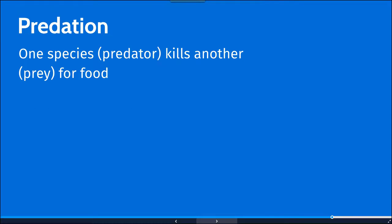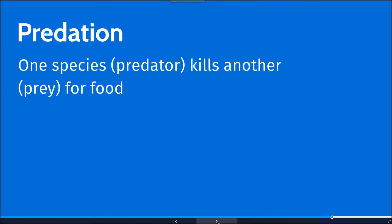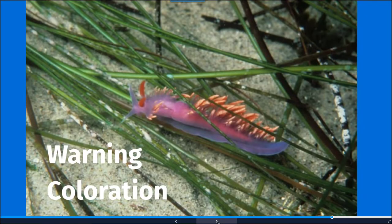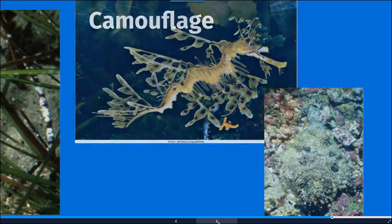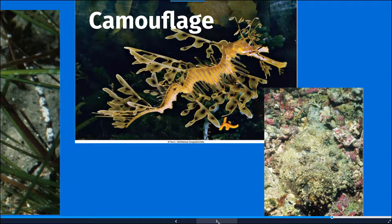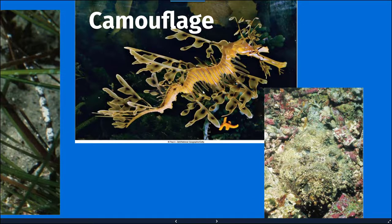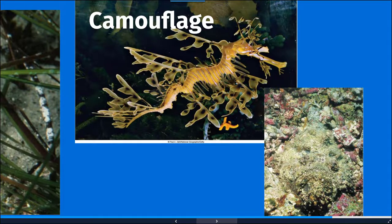Predation is where one species, a predator, kills another, a prey, for food. There are ways organisms can fend off predators — they can have warning coloration signaling they are poisonous, or they can have camouflage. One example is the weedy sea dragon, which has a great display at the San Diego Birch Aquarium. Another example is a halibut camouflaged and blending in with the seafloor.